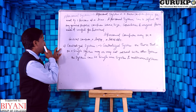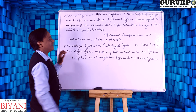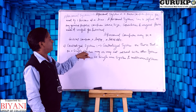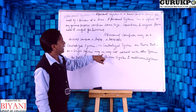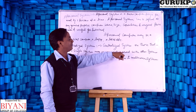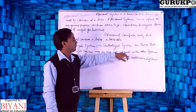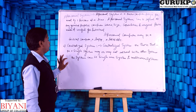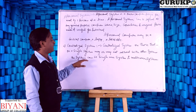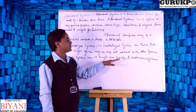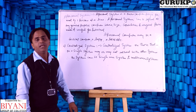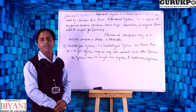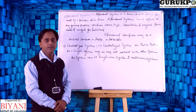A centralized system is one that runs on a single system and may not interact with other systems. For example, the system can be a single-user system or a multi-user system. In these systems, we have to use and perform our tasks in different ways.